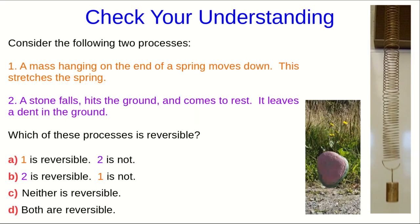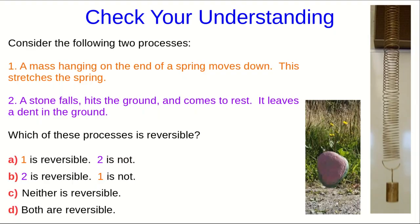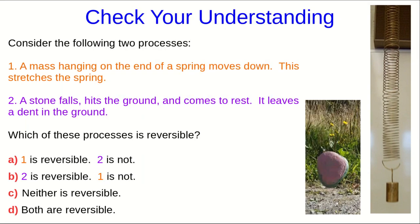This idea of understanding whether a process is reversible or not is going to be crucial to us as we go on, so let's check that you're understanding it. So let's think about two processes. One is a mass hanging on the end of a spring, and it moves down, which stretches the spring. The other process is a stone falling, and it hits the ground and comes to rest, and as it hits the ground it leaves a dent. So, which of these processes are reversible?